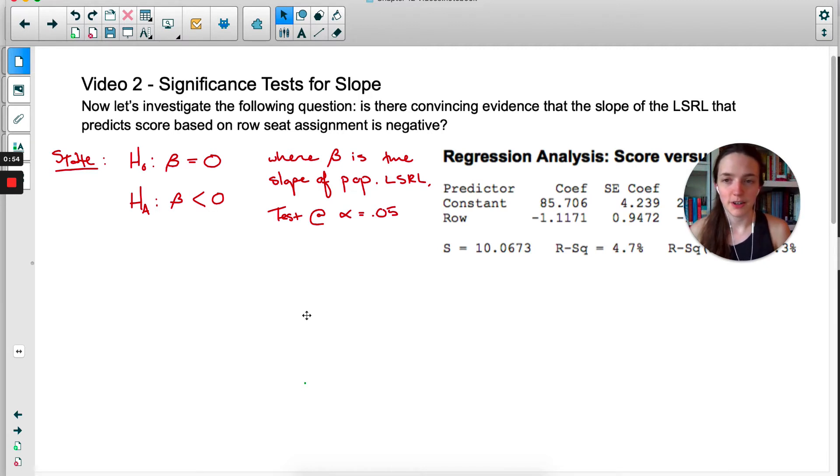We're starting out with it equaling zero because they asked if there was evidence that the slope was actually negative, so our alternate will be that beta is less than zero. Remember that null and alternate hypotheses have to be about a parameter.